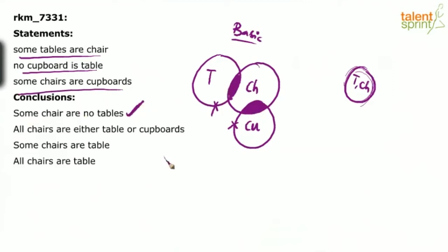This is a very interesting conclusion. Usually we would say some chairs are not tables is a wrong conclusion just by looking at statement 1, but if you consider the overall diagram, some chairs are not tables is correct because some chairs here are cupboards and cupboards cannot be tables. Hence, the first one is true. The second one — all chairs are either tables or cupboards — is wrong. From the basic diagram itself, you can say this is wrong because he says all chairs are either tables or cupboards, but these remaining chairs are neither tables nor cupboards. So how can we say all chairs are either tables or cupboards? It is wrong.